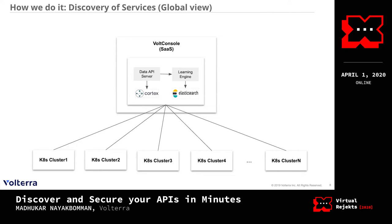At a global level, we have a single global controller with Cortex scraping metrics from multiple clusters and Elasticsearch receiving logs. The learning engine goes through those logs and learns all the API endpoints for each service-to-service pair, continuously learning new API endpoints as they are generated. The data API server looks at metrics from Cortex to create the service-to-service connectivity graph, and also exposes the API endpoints associated with each service pair through a public API.